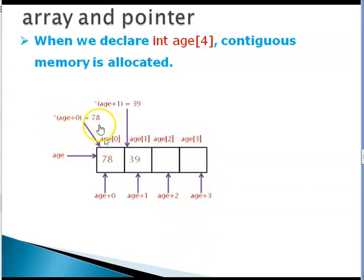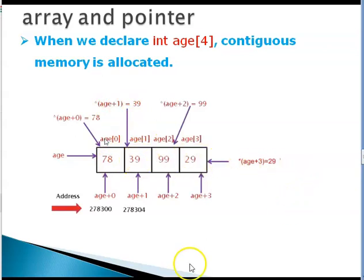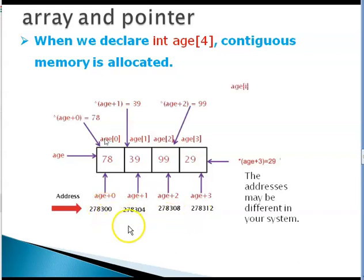And star age plus 0 equals 78 sets the value of this as 78. Star age plus 1 equals 39 sets it as 39 and so on. But if you can further look at these addresses, of course these numbers may be different on your machine but this is 0, 4, 8 and 12.